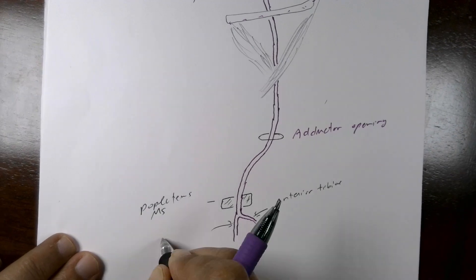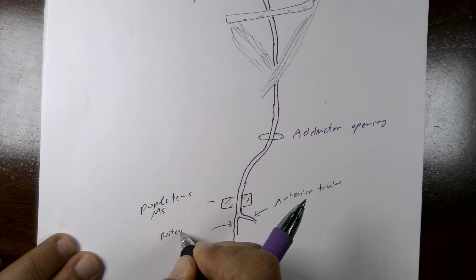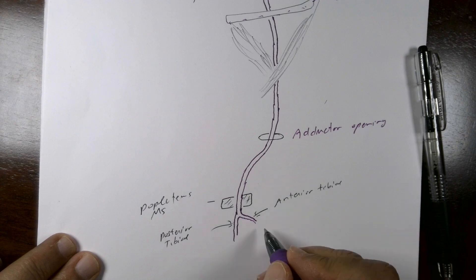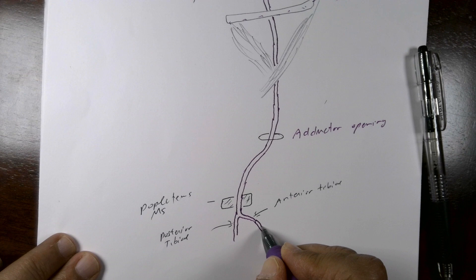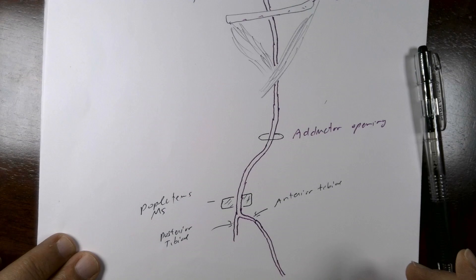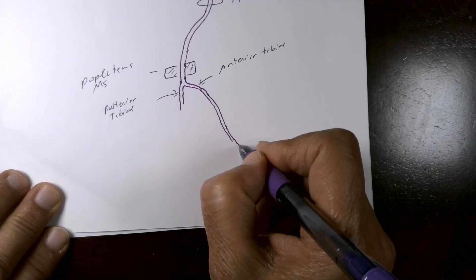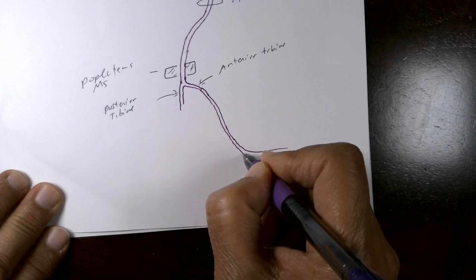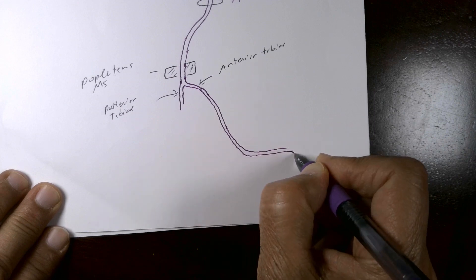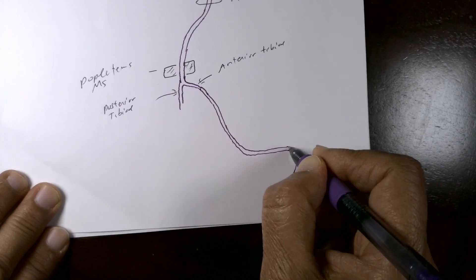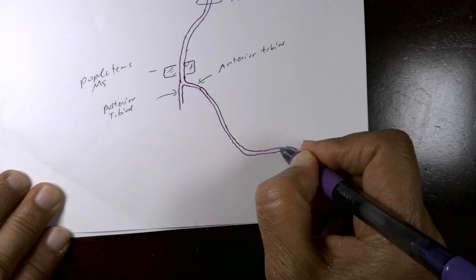The anterior tibial artery passes anteriorly through the interosseous membrane to the front of the leg. It reaches the lower part of the leg and continues onto the dorsum of the foot as the dorsalis pedis artery.